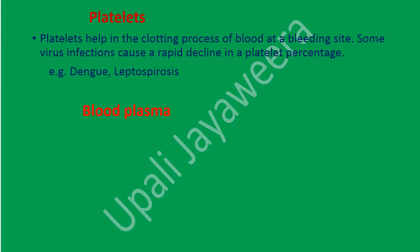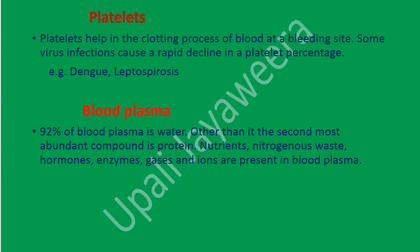Now we will think about blood plasma. 92% of blood plasma is water. Other than that, the second most abundant compound is protein. Nutrients, nitrogenous waste products, hormones, enzymes, gases, and ions are also present in blood plasma.